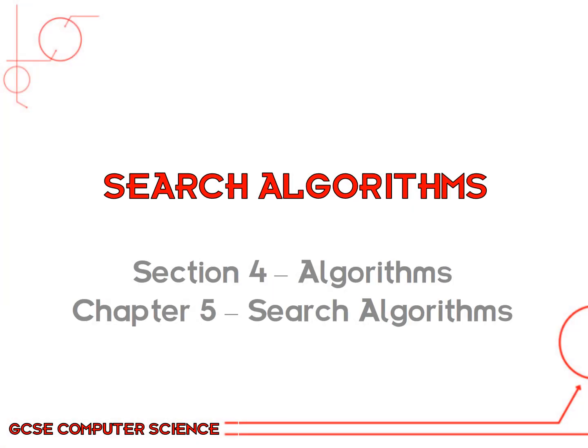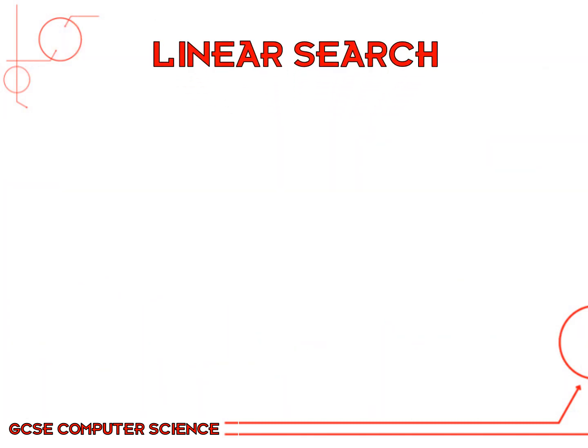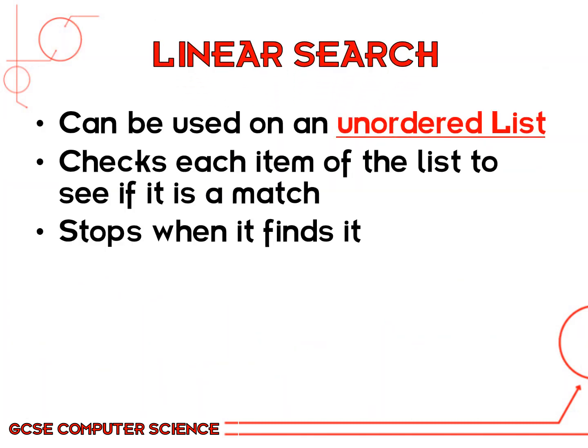This video is about search algorithms: linear search and binary search. If we look at linear search first, linear search can be used on an unordered list. So in other words, any list at all, you can do a linear search on.